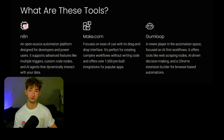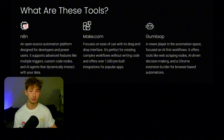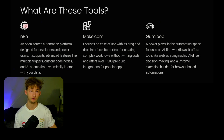Starting with what these tools are actually about: N8N is an open-source automation platform designed for developers and power users. Being open-source, you can run it on your own server, on N8N's cloud, or third-party host it on Railway.com for as little as $5 every single month. It supports advanced features like multiple triggers inside workflows, custom code nodes, and AI agents that dynamically interact with your data. Make.com focuses on ease of use with its drag-and-drop interface, perfect for creating complex workflows without writing any code, and offers over 1,500 pre-built integrations for popular apps.